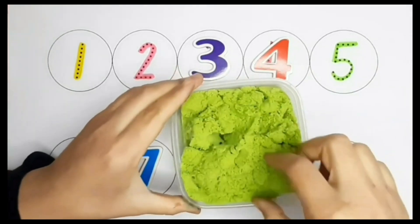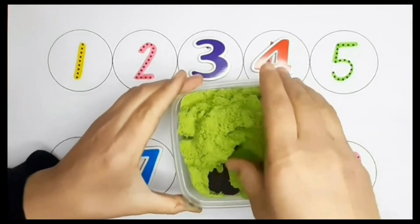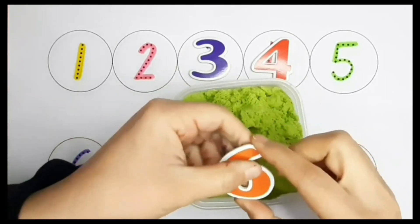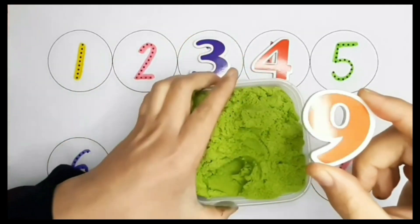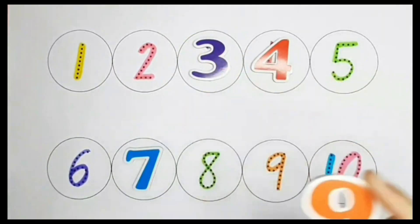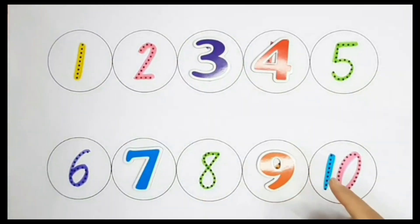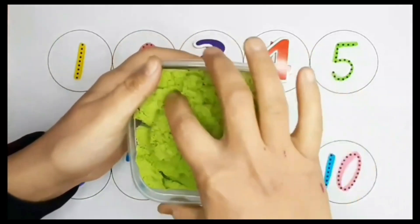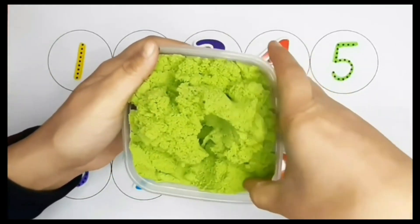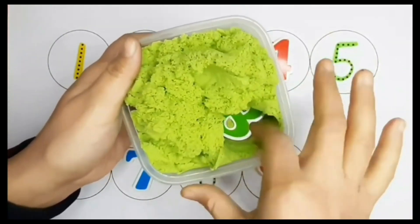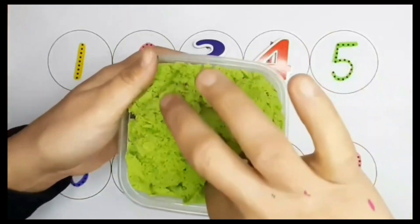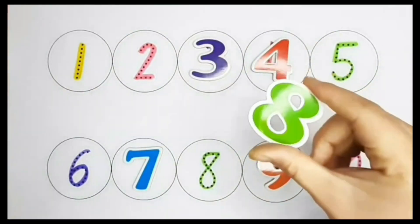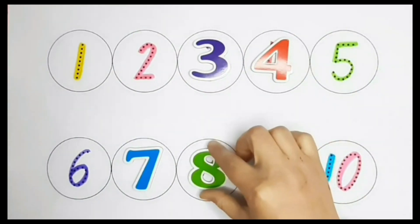Let's see what number is hiding in the scene. It's number 9. Let's find it. That's right, number 9. Let's see what number is hiding in the scene. It's number 8. Let's find it on the board. Yes, number 8.